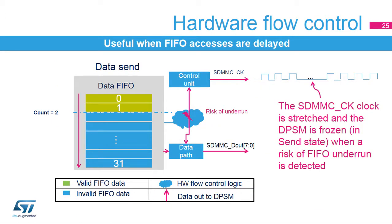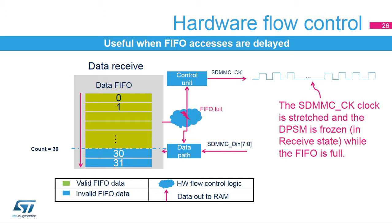The hardware flow control function is used to avoid FIFO underrun when DPSM is in send mode and overrun errors when DPSM is in receive mode. The hardware flow control logic stops the SDMMC CK pin signals and freezes the DPSM when a risk of underrun or overrun is detected. Hardware flow control must not be used with a variable delay, for example SDR104. In send state, the SDMMC CK clock signal is stretched and the DPSM is frozen to prevent FIFO underruns; the clock and DPSM are restarted when the FIFO is half full or all last transfer data is available. In receive state, the SDMMC CK clock is stretched and the DPSM is frozen while the FIFO is full; the clock and DPSM are restarted when the FIFO becomes half empty.